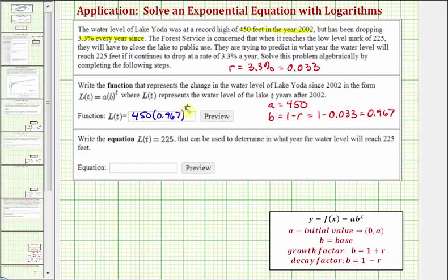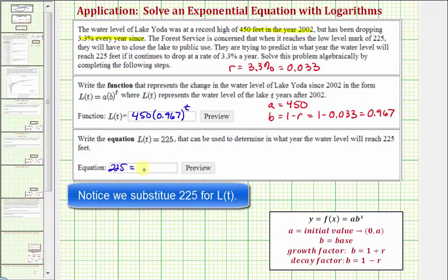Be careful, we do need to use the variable t because notice how our function L is a function of t. Next, we want to write the equation L(t) equals 225 that can be used to determine in what year the water level will reach 225 feet. So we want to know the value of t where L(t) is equal to 225, which means we want to solve the equation 225 equals 450 times 0.967 raised to the power of t.